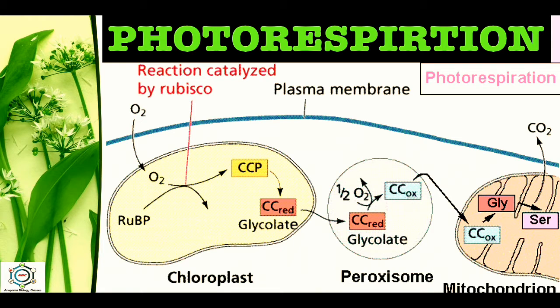Since then it has been reported in a large number of plants, particularly those which perform the C3 cycle. The process is defined by Codco in 1963: Photorespiration is an extra intake of oxygen and extra release of carbon dioxide by green plants in light.